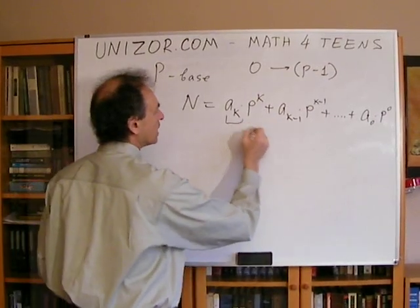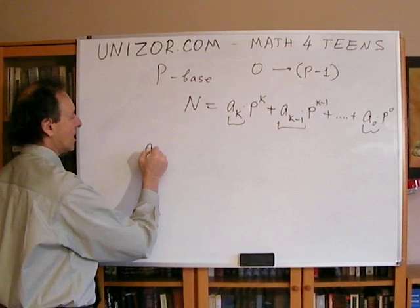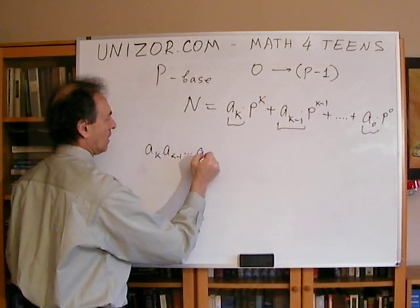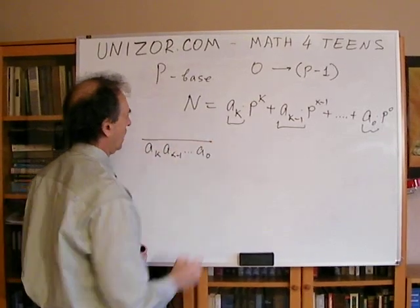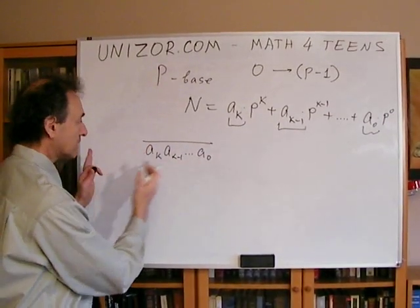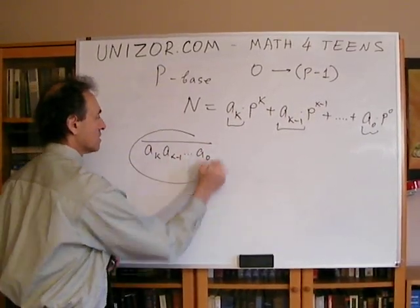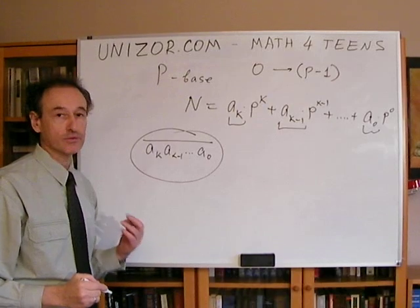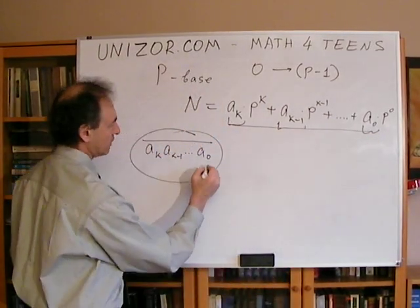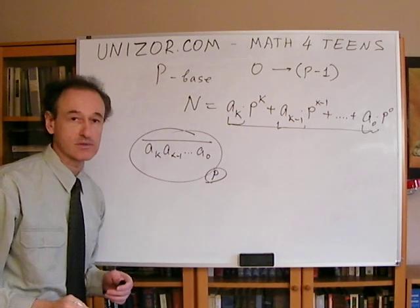Every number n can now be represented as certain multipliers times p to a certain degree, certain power of p, another multiplier on a smaller number, etc. And on the rightmost place you'll have this. If you take only these multipliers and write them together, this particular way of representing the number means this. And you have to say that p is the base of your system.